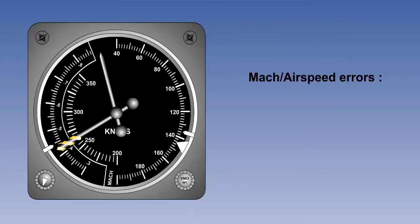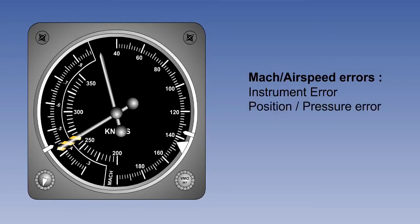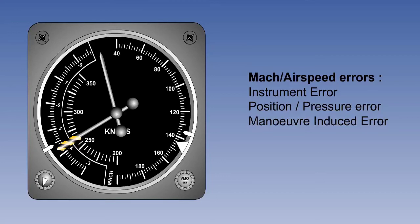Where the Mach airspeed indicator uses pitot static sources, the basic principles of both the airspeed indicator and the Mach meter still apply, and the combined instrument will have the errors of both. These errors are, firstly, instrument error, which results from manufacturing imperfections, friction and play in the moving parts of the instrument. The next error is position or pressure error, which occurs as a result of suction and turbulent airflow in the vicinity of the pitot head or static source. And thirdly, we have maneuver-induced error, which results from temporary and unpredictable fluctuations of air pressure around the static source. Although the Mach meter does not suffer from density error or compressibility error, the airspeed indicator does, and therefore we have to consider these errors as well.